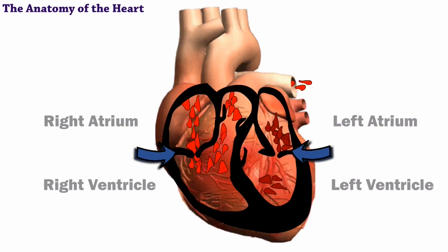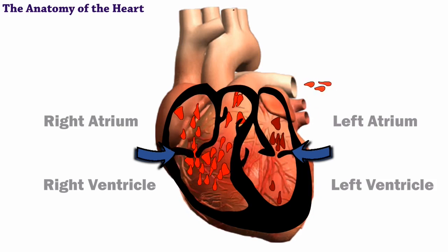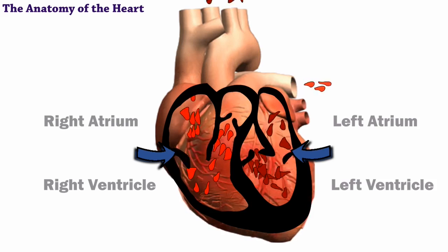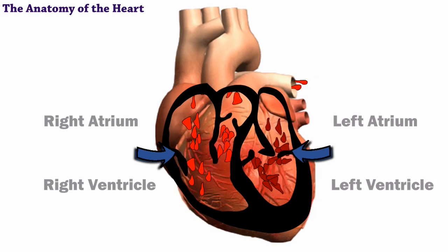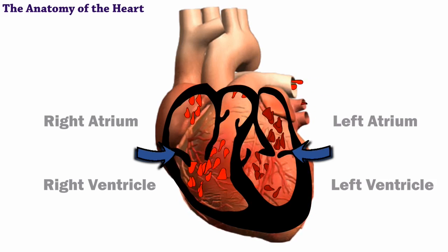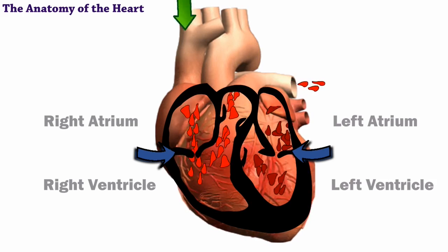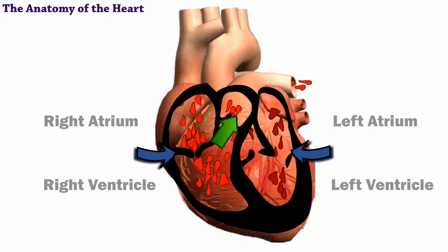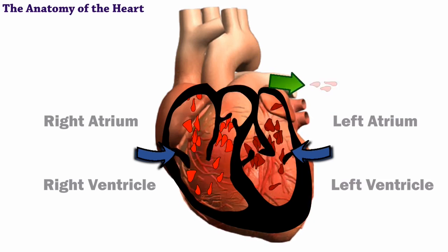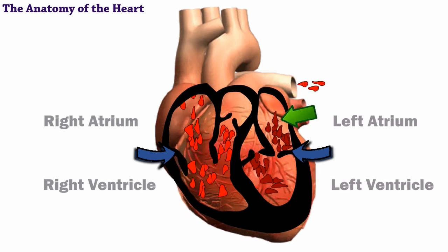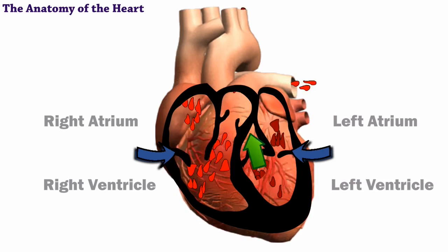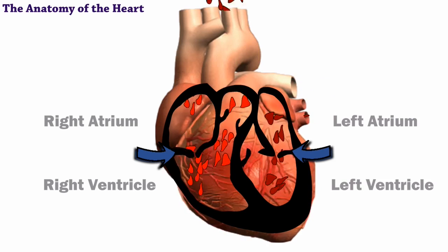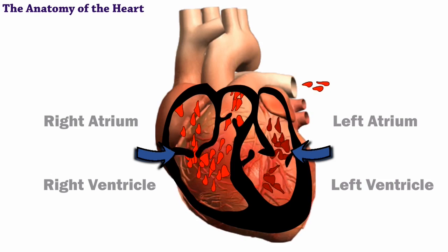The valves effectively move blood throughout the heart by opening in only one direction. This forces the blood to pass through the chambers, into the lungs, and into your body without backing up or flowing backward.